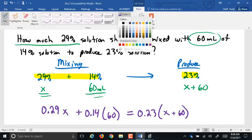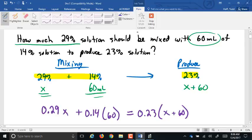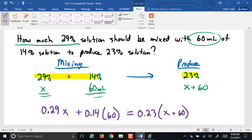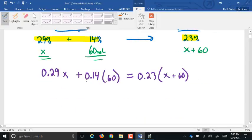Now remember, when we go to solve these equations, our first step is to simplify what we can on each side. On the left side, the only thing we can simplify is to multiply those two together. So we have 0.29X plus, what is 0.14 times 60? 8.4. Looks good.